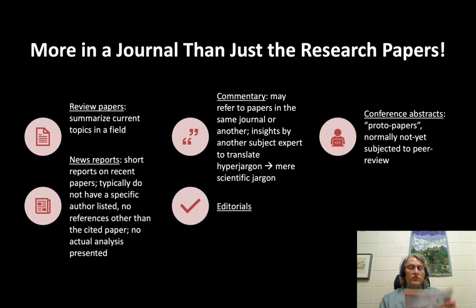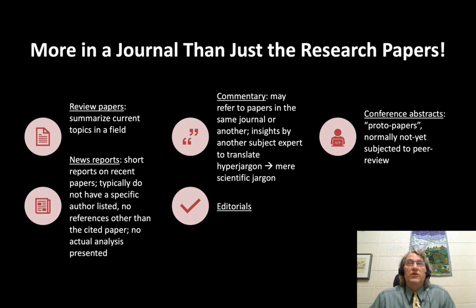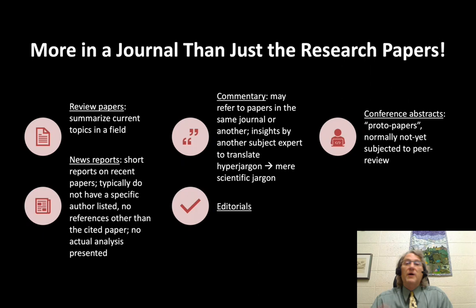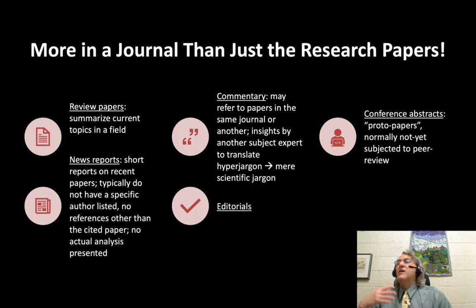So, there's more to a journal than the technical research articles. Sometimes there are what we call review papers. A review paper is typically a little longer than your average technical research paper, and it summarizes the current topics and current conclusions of a field. These are super useful if you're trying to find out the state of the science in a discipline. There are some journals that only publish review papers. Review papers typically do not present new analyses — that's not their function. Their function is to provide a summary of many recent analyses with some synthesis on the part of the author.